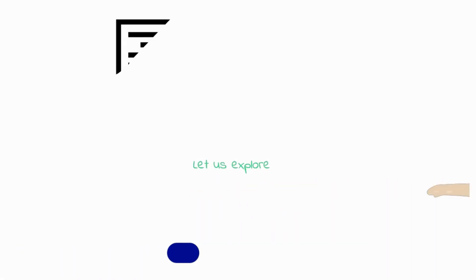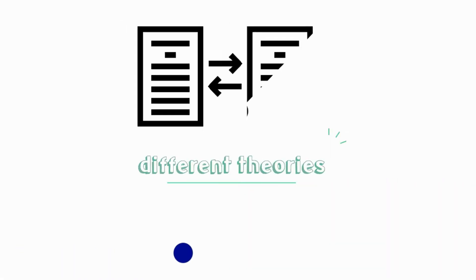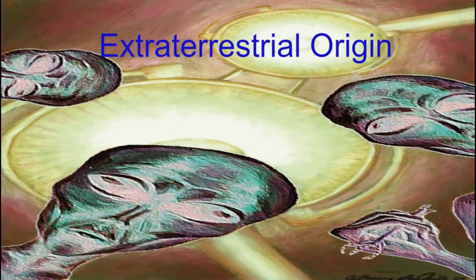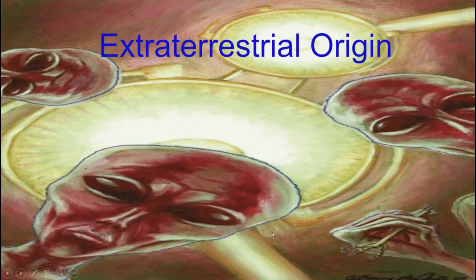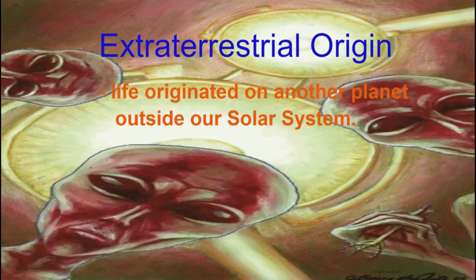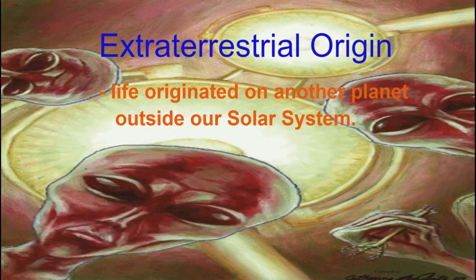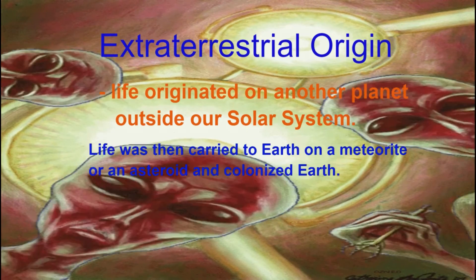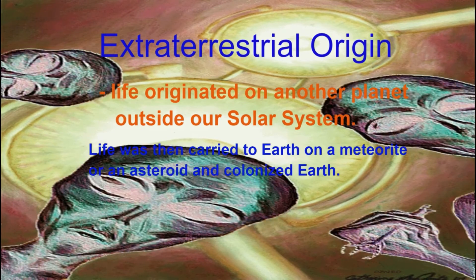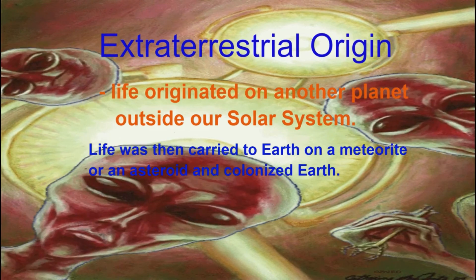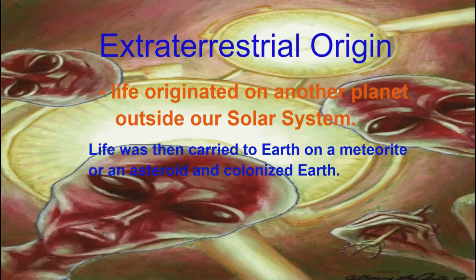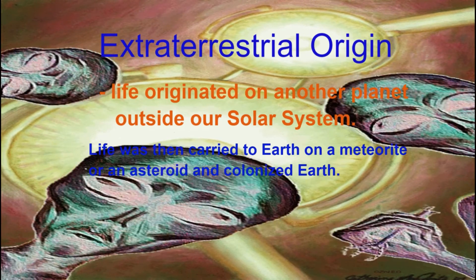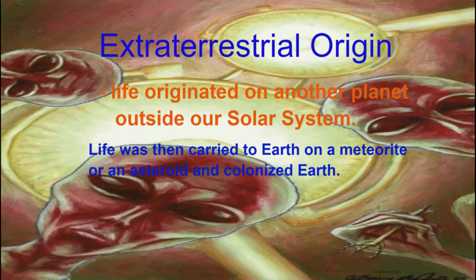Let us explore the different theories and explanations on how life began. Theory number one: the extraterrestrial origin. This hypothesis explains that life originated on another planet outside our solar system. In this theory, life was then carried to Earth on a meteorite or an asteroid and then colonized Earth. However, this hypothesis has not been proven.